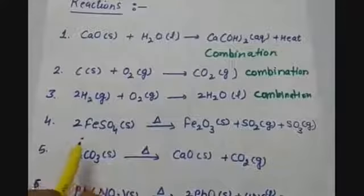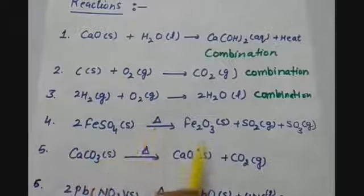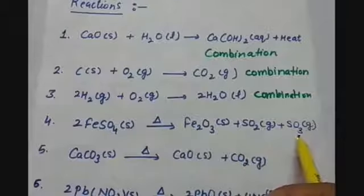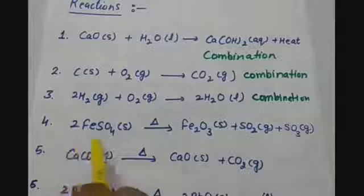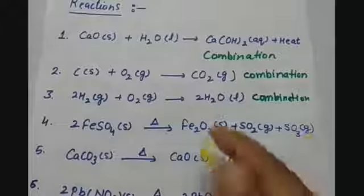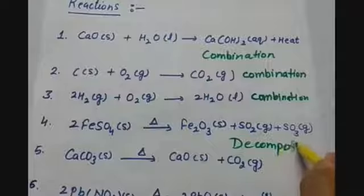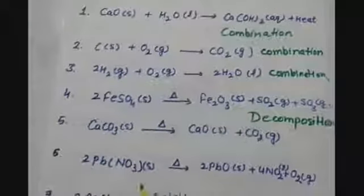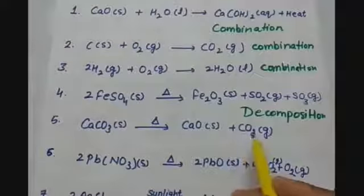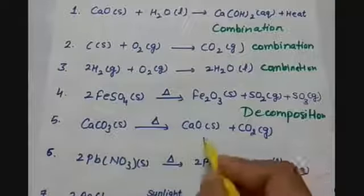In the next reaction we have ferrous sulphate in solid form. Heat is provided to it and it is converting into ferric oxide, sulphur dioxide, and sulphur trioxide. Here a complex substance on heating is converting into simpler substances, so this is called a decomposition reaction. Next, calcium carbonate on heating gives calcium oxide and carbon dioxide, which are simpler substances. So this is also a decomposition reaction.